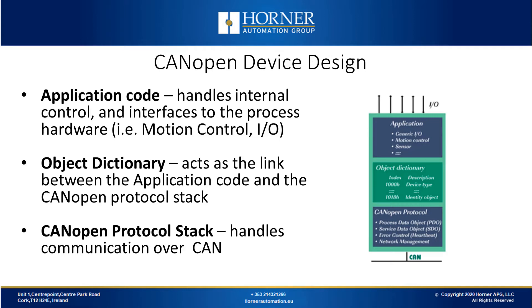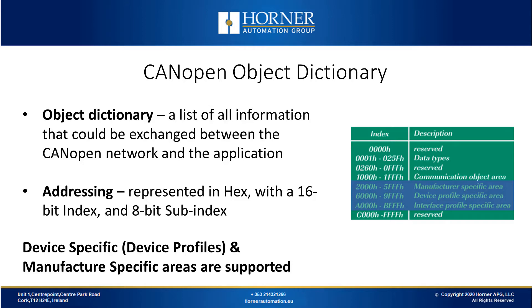Now we'll discuss the architecture and the messaging available on CANopen. The application code handles internal control and interfaces to the process hardware. The Object Dictionary acts as the link between the application code and the CANopen protocol stack, which handles all of the communication over CAN. The Object Dictionary links the application and the network with a list of all information that could be exchanged. The addressing is represented in HEX with a 16-bit index and an 8-bit sub-index.